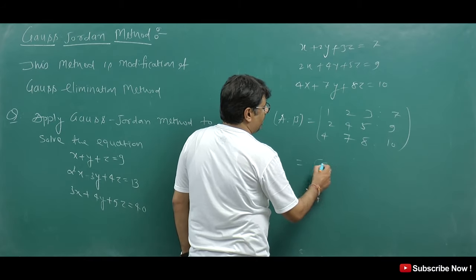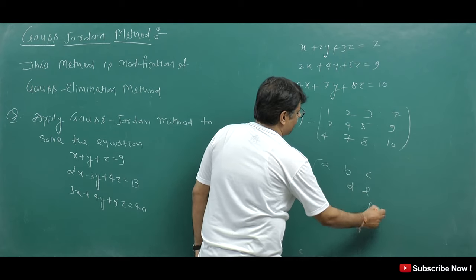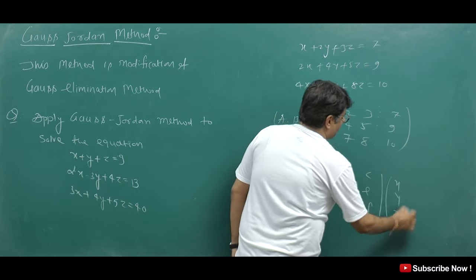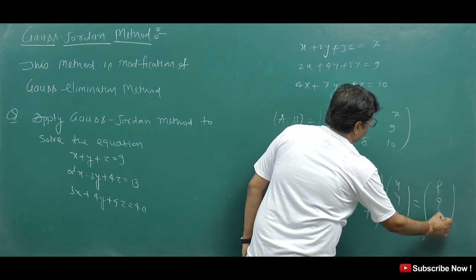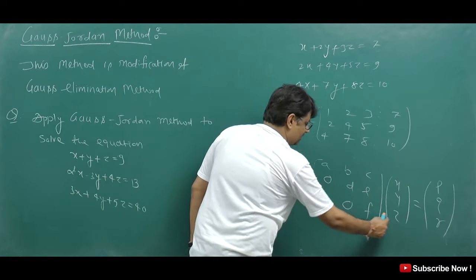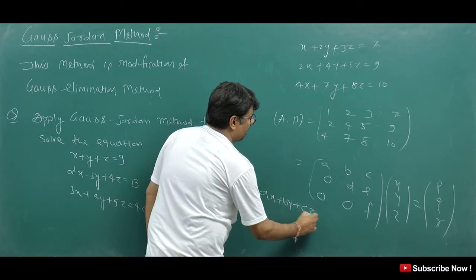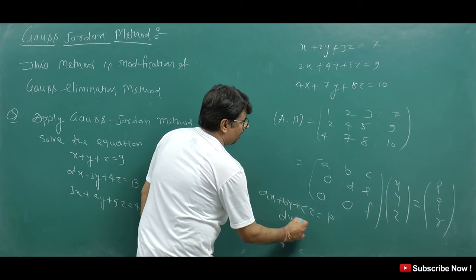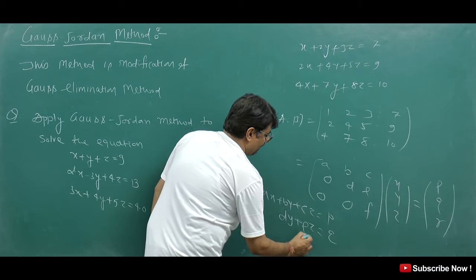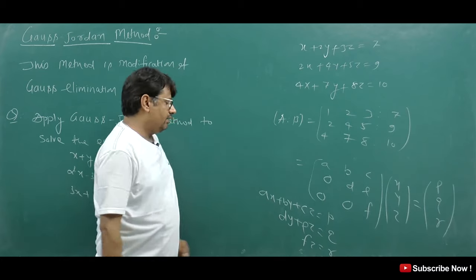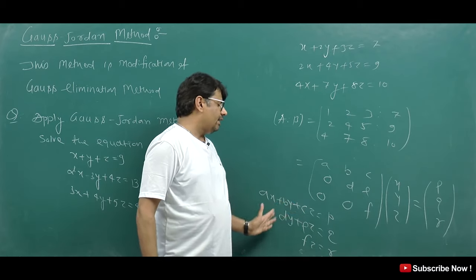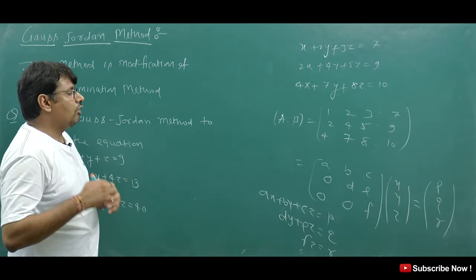We convert the matrix to upper triangular form with entries A, B, C in row 1; D, E in row 2; and F in row 3. The remaining entries are zero. Writing this back in equation form: Ax + By + Cz = P, Dy + Ez = Q, and Fz = R. Then we back-substitute: z = R/F, then find y, and finally x. This is the Gauss Elimination Method.